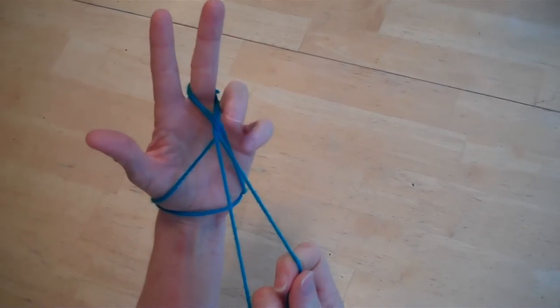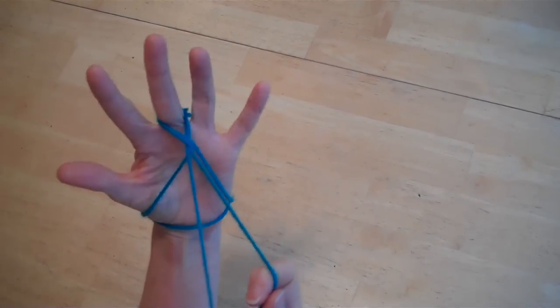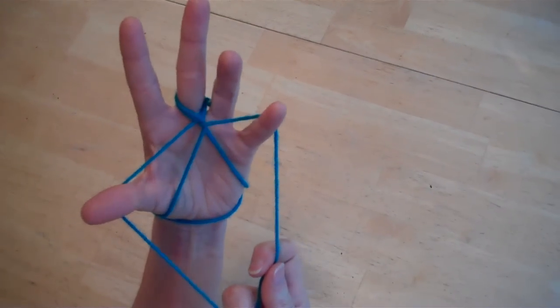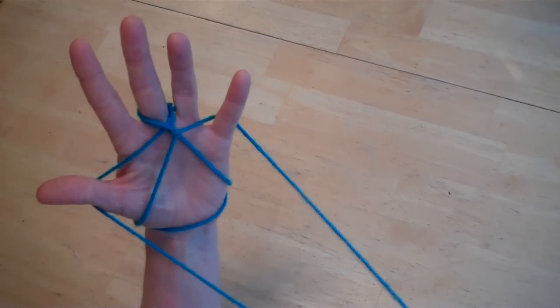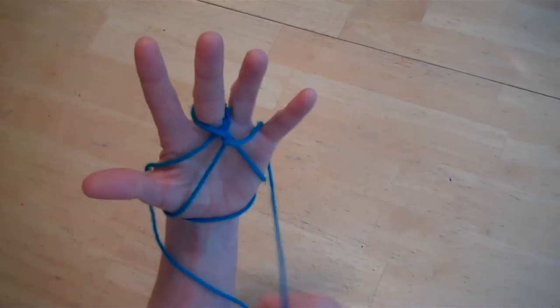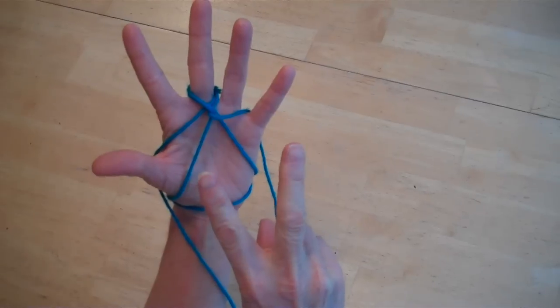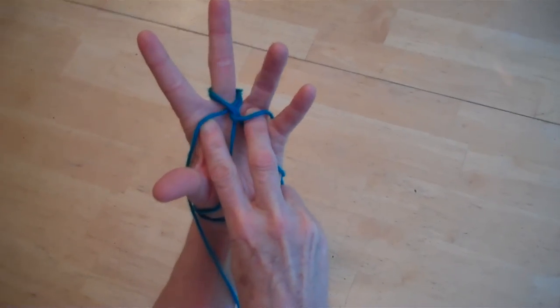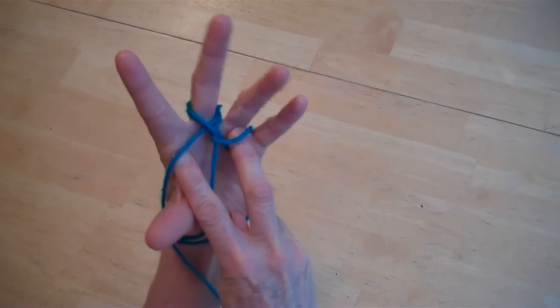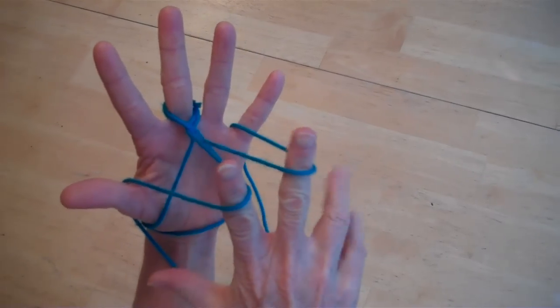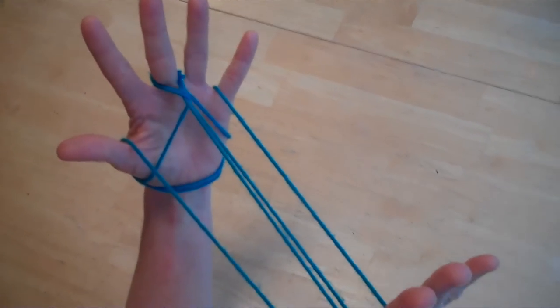Next, take your pinky and your thumb and pick up each one of those that's hanging down. Now take your pointer and your middle finger on your right hand and pick up these two strings and pull everything tight, not too tight.